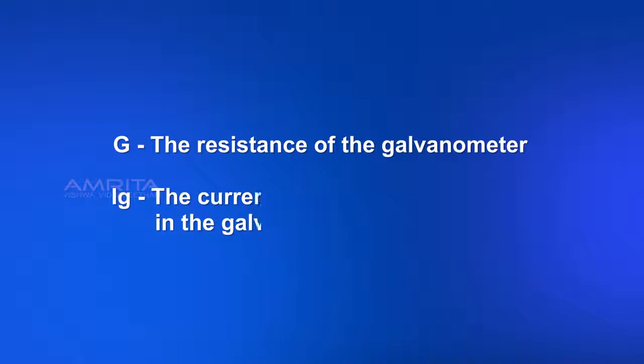Theory: Let G be the resistance of the galvanometer and IG be the current for full scale deflection in the galvanometer.